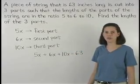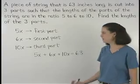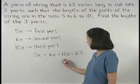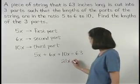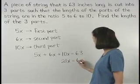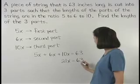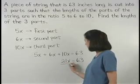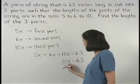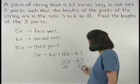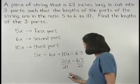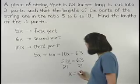Simplifying on the left side gives us 21x equals 63, and dividing both sides by 21, x equals 3.